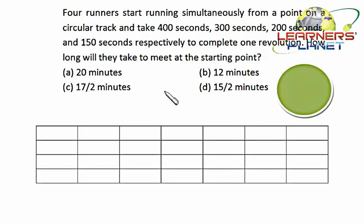Now let's see this problem. Four runners start running simultaneously from a point on a circular track and take 400 seconds, 300 seconds, 200 seconds, and 150 seconds respectively to complete one revolution. How long will they take to meet at the starting point? Suppose these four persons are A, B, C, and D. They're starting from one particular point and they have to meet at the same point once again.